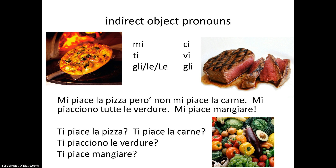Piacere is usually used with the indirect object pronouns: mi, ti, gli, le, le, ci, vi, gli. The indirect object pronoun refers to who is being pleased, while the verb itself refers to who or what is pleasing.